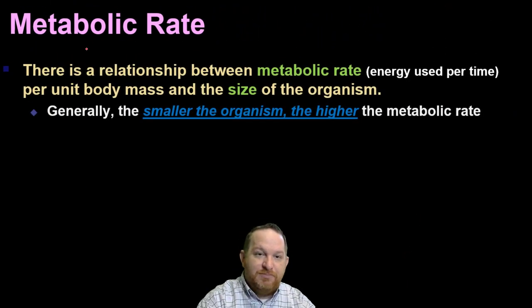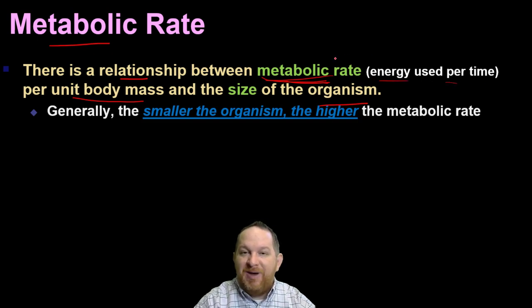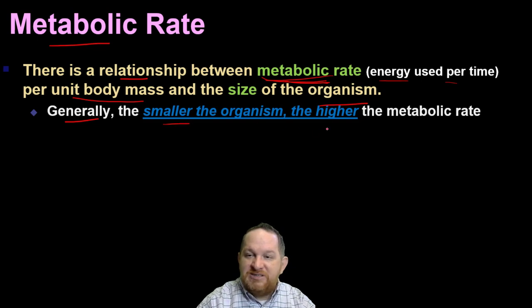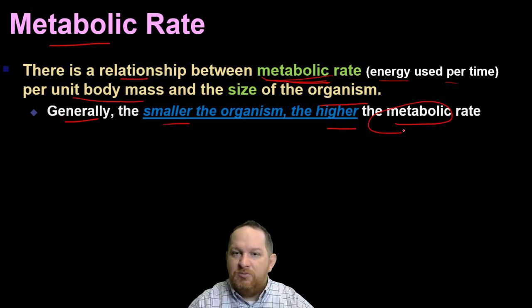Speaking of metabolic rate, there is a relationship between metabolic rate and per unit body mass of an organism. Our metabolic rate is how much energy we're using per time. You may have heard someone say, oh, they've got a fast metabolism. That just means they're breaking down their food faster. They're using a lot of energy per time.